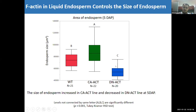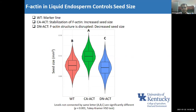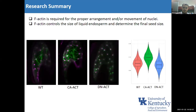I was also interested in the final seed size. Checking dry seeds in these lines, I found a similar result — in the overexpression line, seed size increased significantly, and in the dominant negative line, seed size decreased. So F-actin is required for the proper arrangement and movement of endosperm nuclei, and controls the size of liquid endosperm, ultimately determining final seed size.